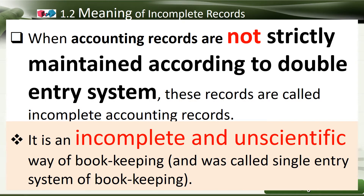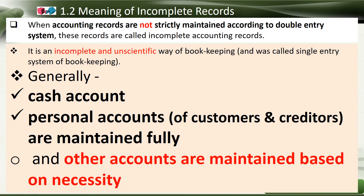What is the meaning of incomplete records? When accounting records are not strictly maintained according to the double-entry system, these records are called incomplete accounting records. It can also be said that it is an incomplete and unscientific way of bookkeeping. Records maintained by this unscientific way of bookkeeping are also called the single-entry system of bookkeeping. Generally, in this system, only cash accounts and personal accounts of customers and creditors are maintained fully, while all other accounts are maintained based on necessity.